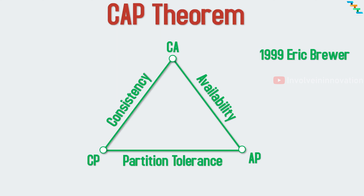That is, for a given system, it is only possible to achieve two of these three. The CP system delivers consistency and partition tolerance at the expense of availability. When the data is shared across multiple nodes, the system has to shut down the non-consistent or out-of-sync node and makes it unavailable until the partition is resolved.